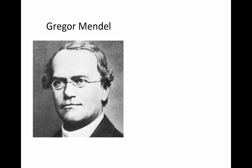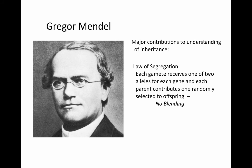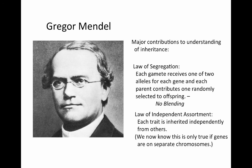There was, however, a Czech monk, Gregor Mendel, who had come up with an explanation for this. He wrote in a language that Darwin did not understand well, and Darwin received tons of correspondence, so Mendel's work was largely ignored for 50 years. He did get the idea of inheritance right. He made several major contributions to our understanding. One is his law of segregation — that each gamete receives one of two alleles for each gene, and each parent contributes one randomly selected to offspring. This is the idea that there's no blending. Second is his law of independent assortment — that each trait is inherited independently from others. We now know that this is only true if genes are on separate chromosomes, but Mendel showed this quite well.